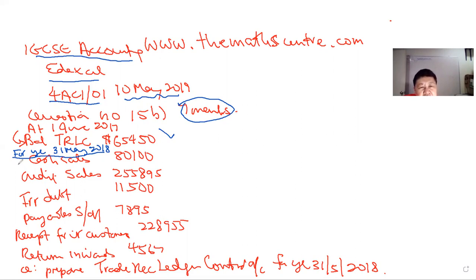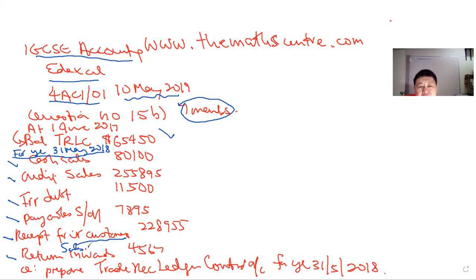For the year ended 31 May, here are the important figures: cash sales, credit sales, irrecoverable debt, payables set-off — which means you contract that amount against your TPLC (Trade Payables Ledger Control or Purchases Ledger Control) — receipts from credit customers, and return inwards, which is the same as sales returns. This is a seven-mark question.